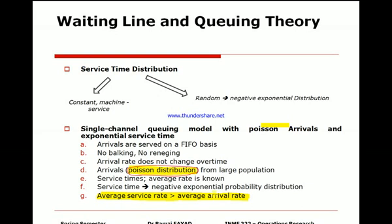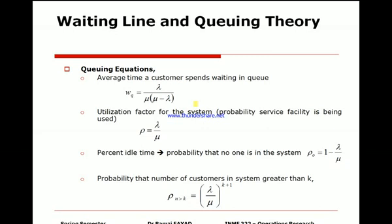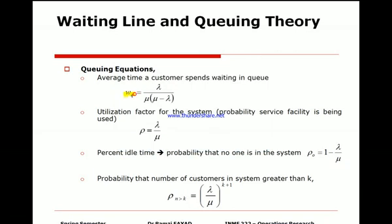The key variables are: lambda (λ) — the mean number of arrivals; Lq — the average number of customers in the queue; L — the average number of customers in the system including those being served; Wq — the average time a customer spends waiting in the queue, which is extremely important because all service stations work to minimize this value as much as possible; and W — the average time a customer spends in the system.